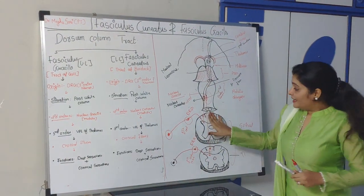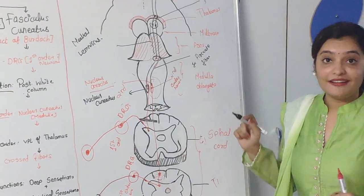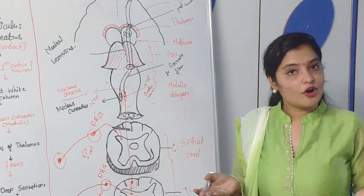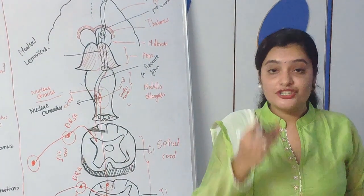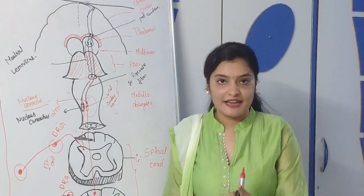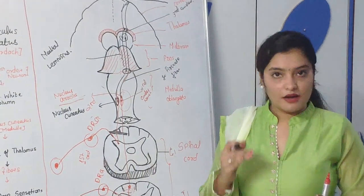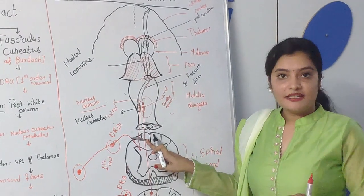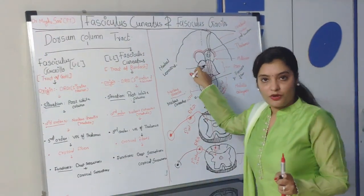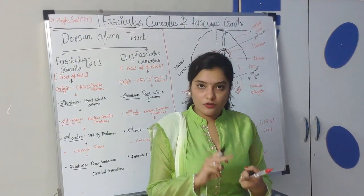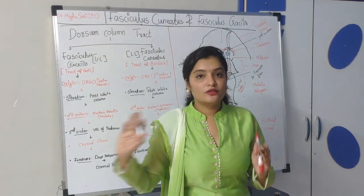Regarding the lesion: if there is damage at the level of the posterior white column, you will find loss of sensation towards the same side — not the opposite side. This is because the tract does not cross at the spinal cord level; it crosses only at the level of the medulla oblongata. So a lesion produces ipsilateral loss of kinesthesia, loss of proprioception, loss of vibration sense, astereognosis, loss of fine touch, and loss of two-point discrimination.